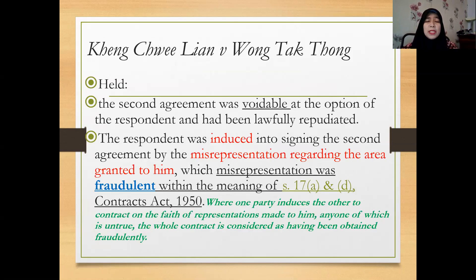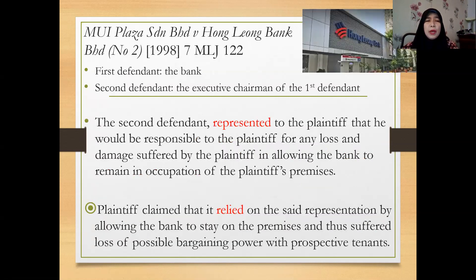We are done with the first case — the biscuit factory case, or the real name of the case, Keng Chui Lian. The second case for today is Mui Plaza and Hong Leong Bank Berhad — one of the banks in Malaysia. Let's get to know who the parties are.